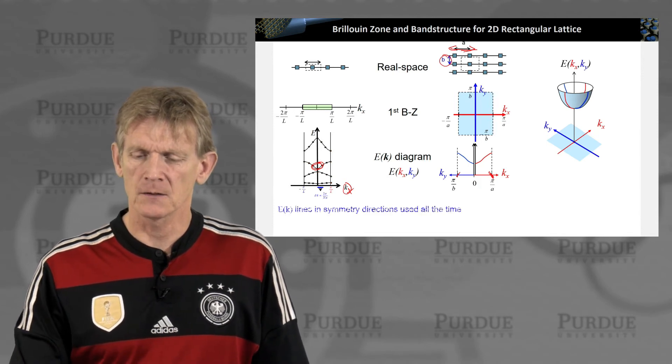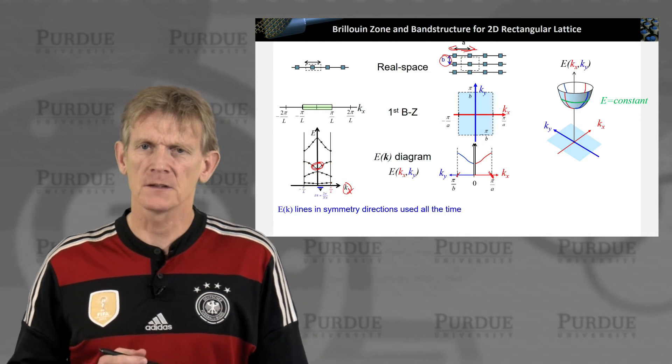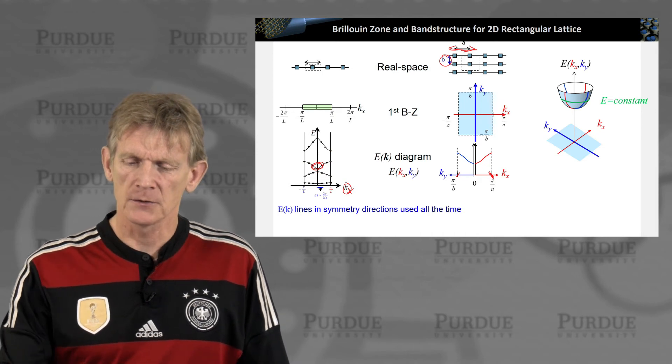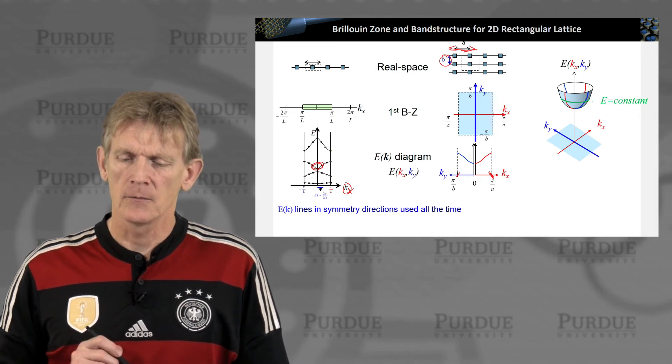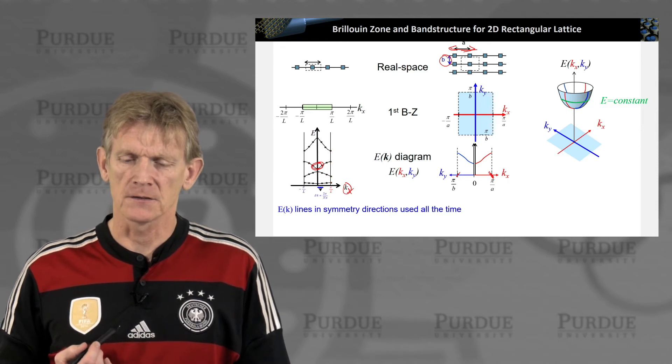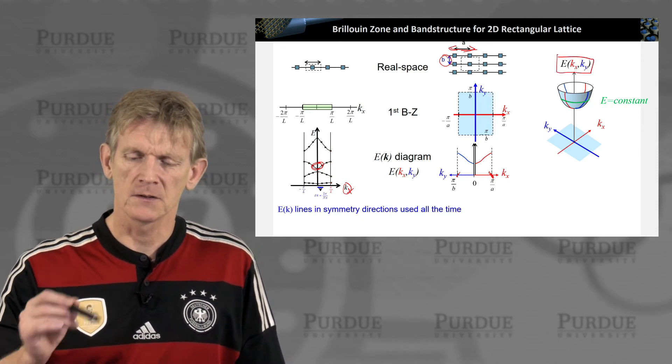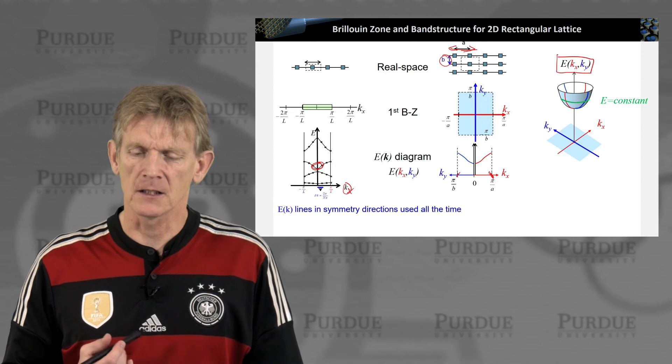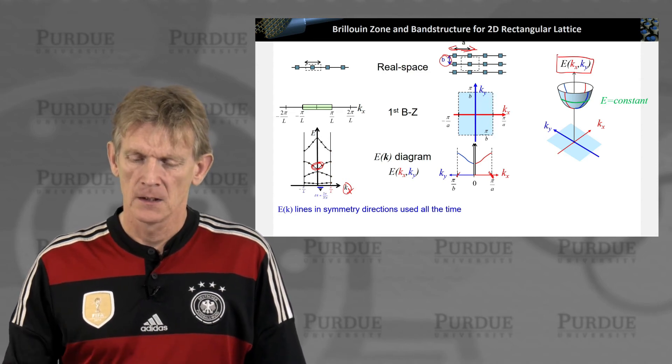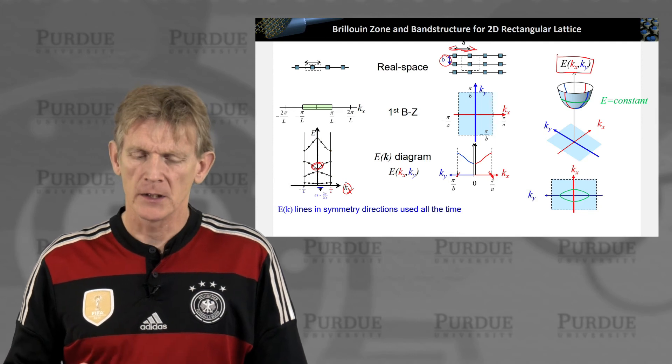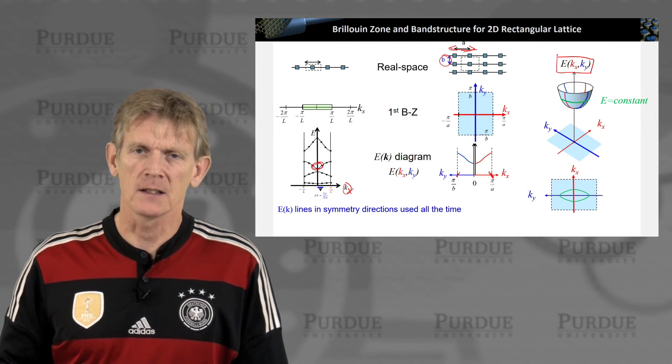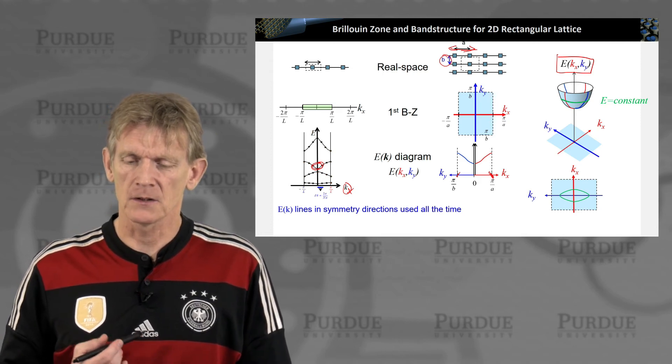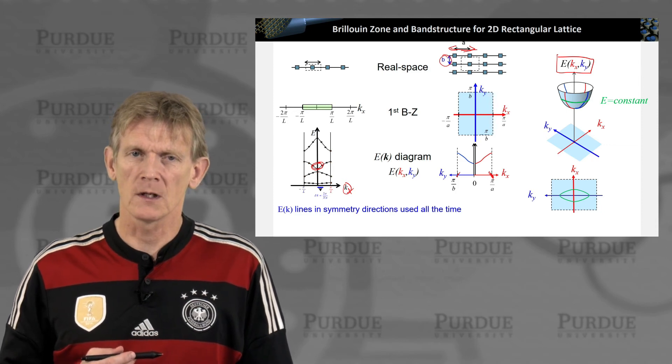Another very important aspect that we deal with is a constant energy surface. In the 2D case, it's a constant energy line that would correspond to this green line over here, at which the energy is constant. The vertical axis is the dispersion, is the energy. If we take a slice orthogonal to that axis, we basically get a ring-like structure. But since the kx and ky are not identical on a rectangular lattice, this circle is going to be more like an ellipsoid.